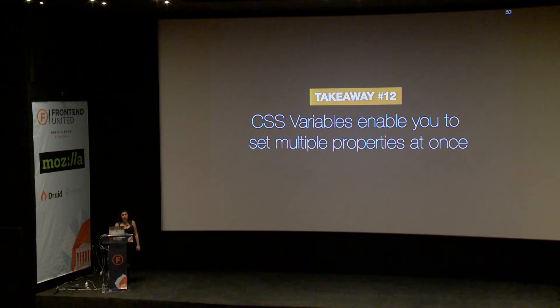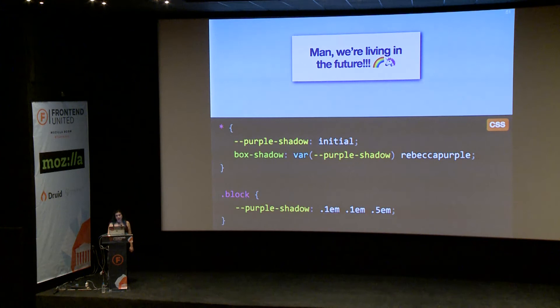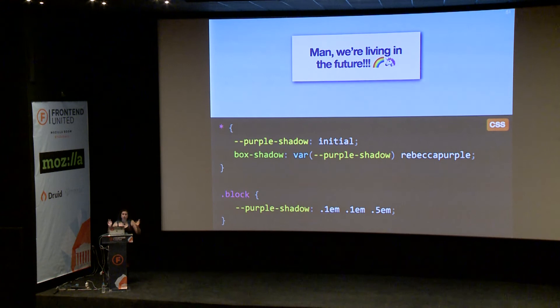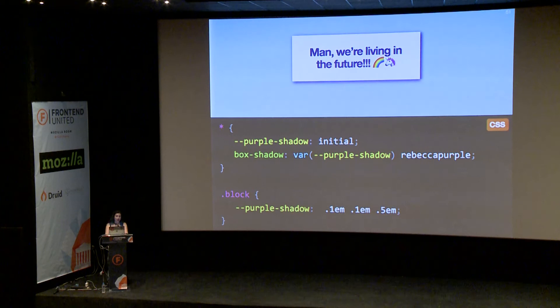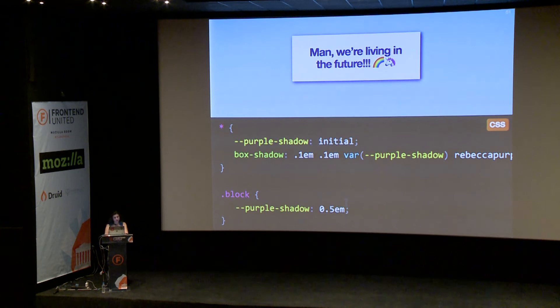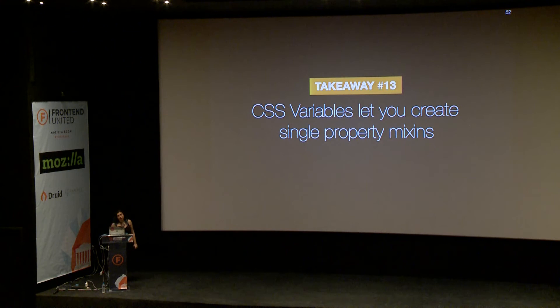Another cool thing you can do is create what I call single-property mixins. If you have a property that takes many arguments and you want to pre-fill some of them, you can use variables for that. Here I've created my own --purple-shadow property that works exactly the same as box-shadow, but it doesn't have a color argument — the color is automatically always rebeccapurple. And it works exactly the same as normal box-shadow in every other way. I can also choose which arguments to pre-fill. So CSS variables let you create single-property mixins. We're still not there with multi-property mixins. This might remind you of function currying if you're a programmer.